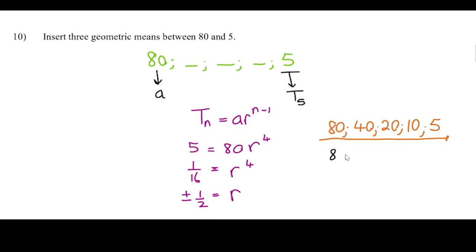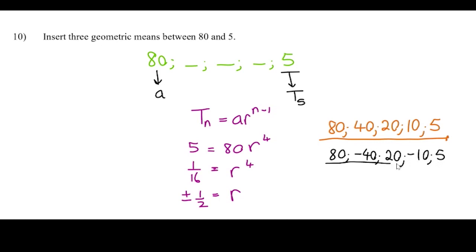Now for the alternative: if r is negative a half and we start with 80, then 80 × (−½) = −40, then −40 × (−½) = 20, then 20 × (−½) = −10, and −10 × (−½) = 5. So there are two possibilities, both of which work.